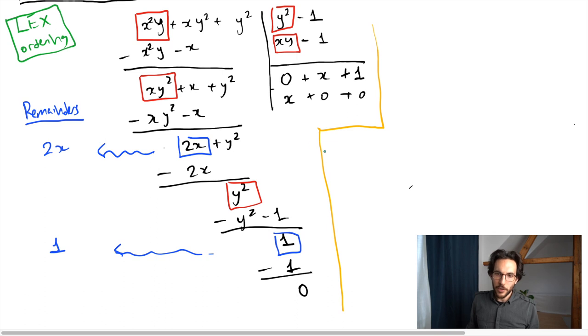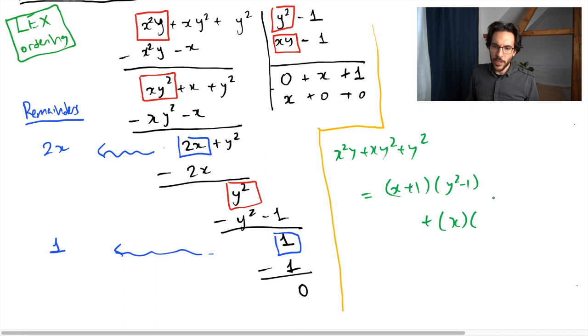We can now gather our quotients and remainders to write our answer in a legible format. I had x squared y plus x y squared plus y squared. This thing equals the first quotient times the first polynomial, so that's x plus 1 times y squared minus 1, plus the second quotient which was x times the second polynomial x y minus 1, and plus the remainder 2x plus 1. What you can observe right now is that none of the monomials in my remaining term is divisible by the leading terms of my dividing polynomials. And also the quotients are relatively small in that every term in the quotients and the dividing polynomials are all smaller or equal to the terms appearing inside the polynomial to be divided.